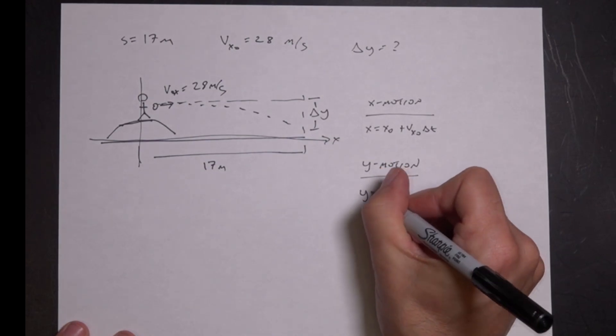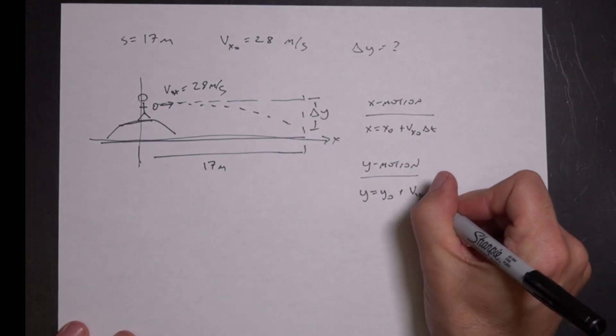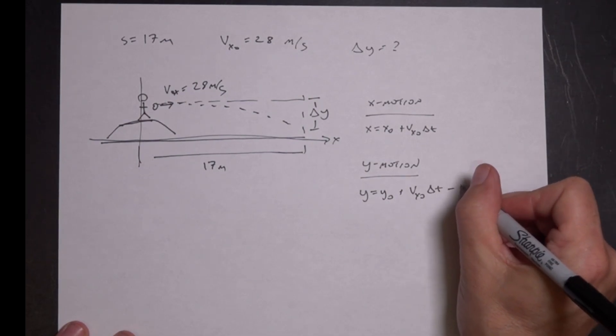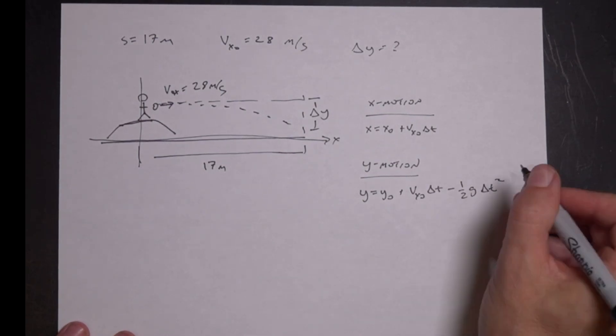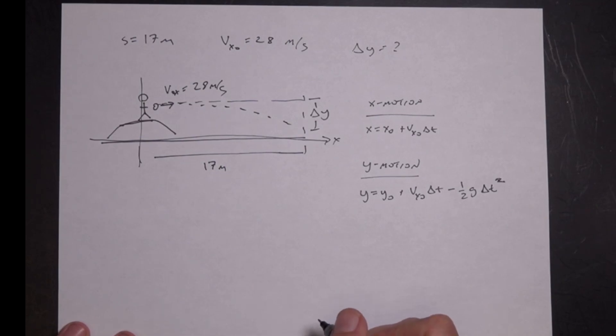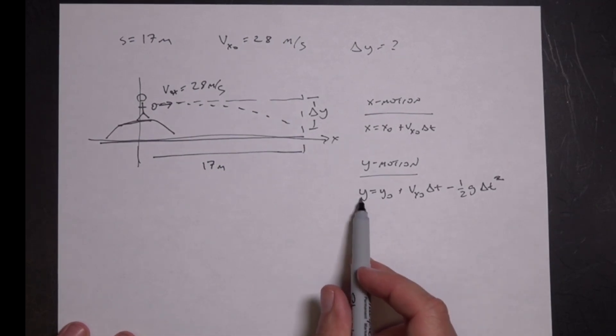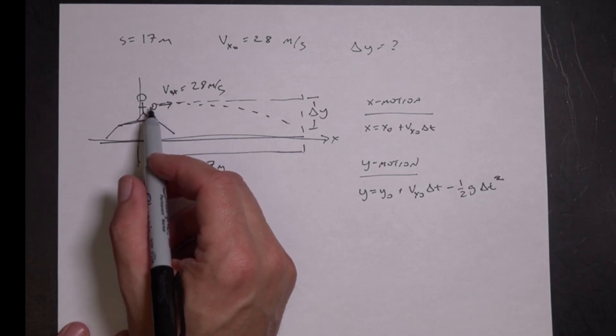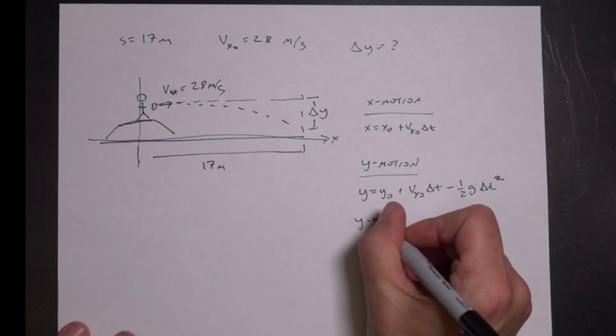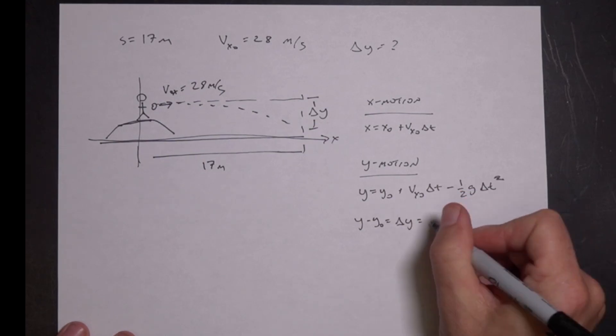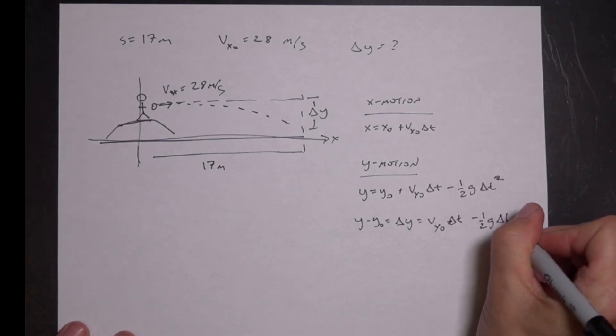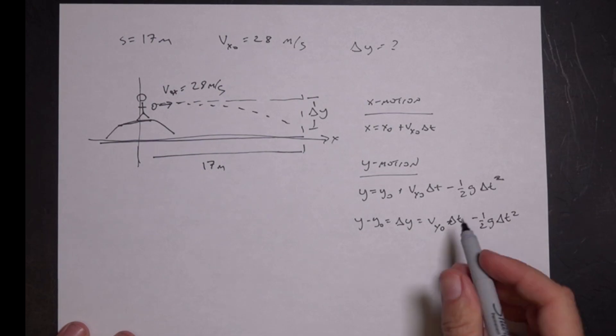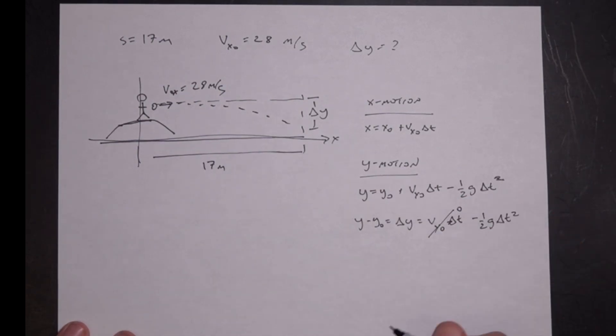And then in the y motion, it looks like this. I have a constant acceleration. So the final y is going to be the initial y plus v y zero delta t minus one half g delta t squared. So I'm assuming the acceleration in the y direction is negative g, where g is 9.8. So in this case, I want to find y minus y zero. I want to find the change in y. So y minus y zero equals delta y. And that's going to be v y zero delta t minus one half g delta t squared. And the initial y velocity, since it's thrown horizontally, is zero.